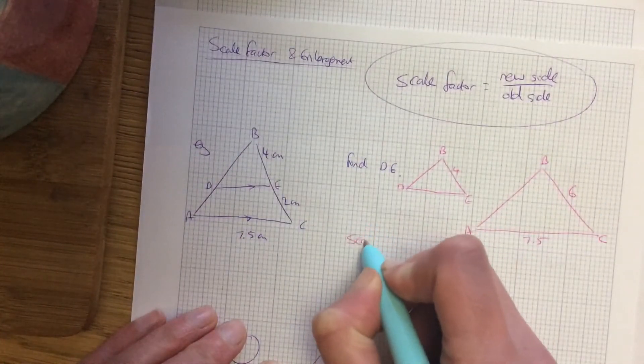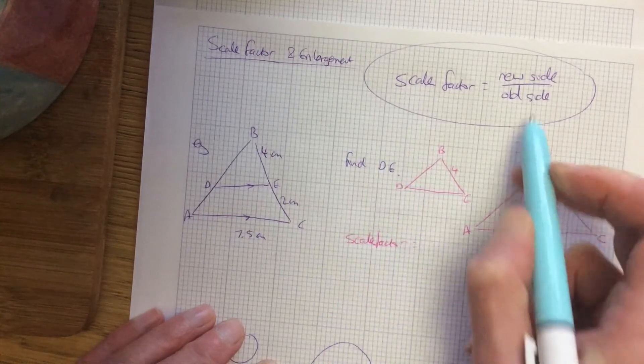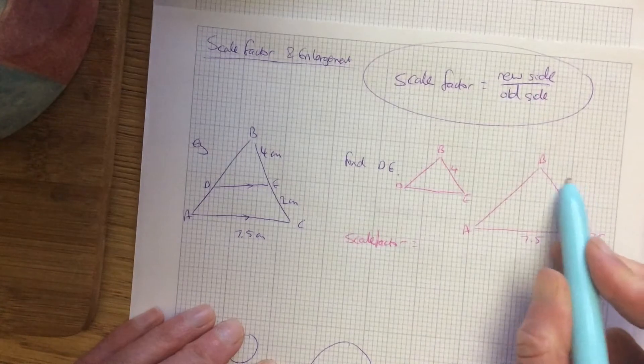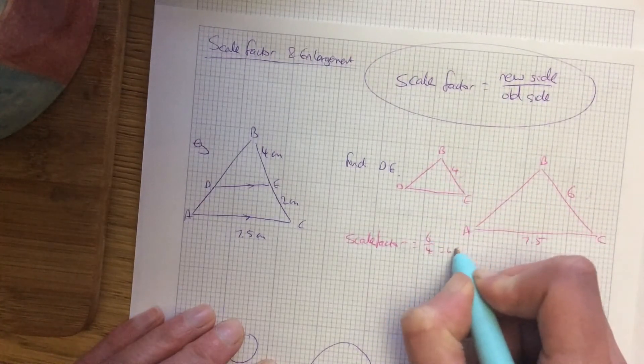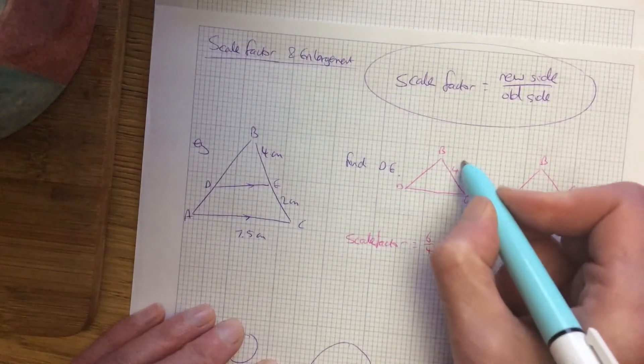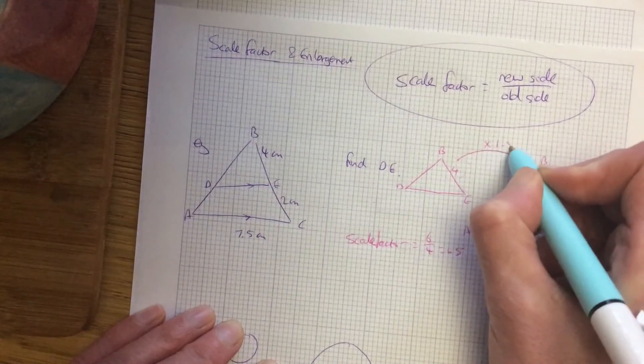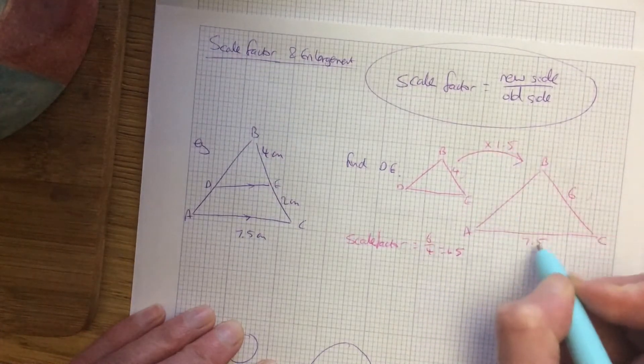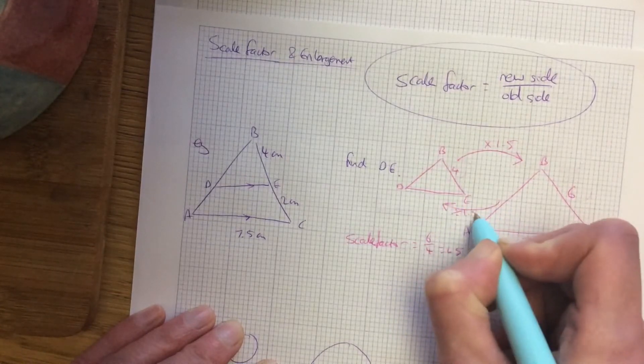Before I do anything I've got to find the scale factor. So it's the new side over the old so six over four, one and a half and basically what this means as I am going up this shape I times it by one and a half and if I was going back to the smaller shape you divide by one and a half.